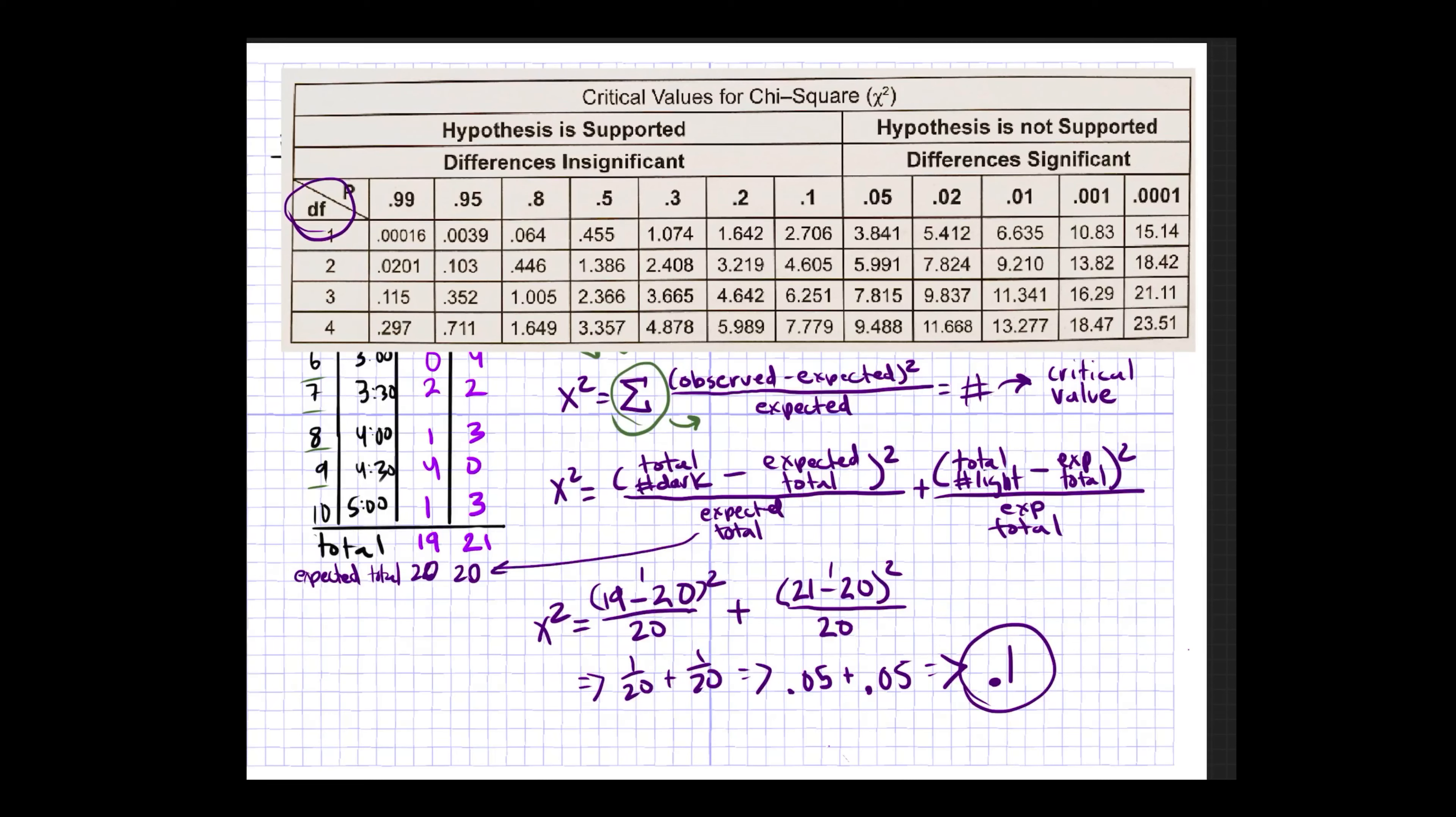So let's look at the values for a degree of freedom of one, and those are all going to be on this line here. Our value is 0.1, so our value is somewhere around here. It's between 0.8 and 0.5. This falls within a range where the differences are insignificant. Now when it says hypothesis is supported, what it means is the null hypothesis is supported. So this value, 0.1, would suggest that in this data set that I made up, the differences between the two groups are likely due to chance.